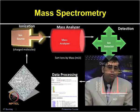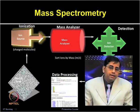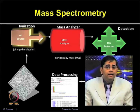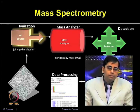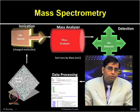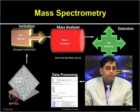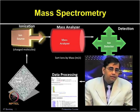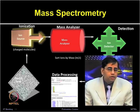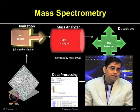Mass spectrometry is a technique for protein identification and analysis by production of charged molecular species in vacuum and its separation by magnetic and electric fields based on mass to charge ratio.